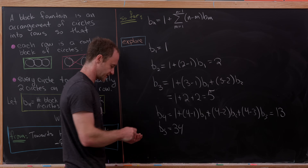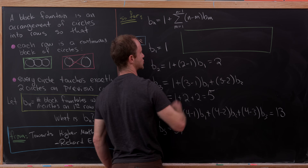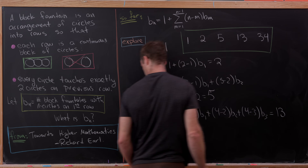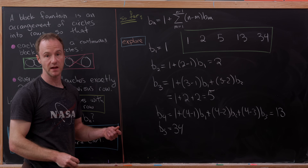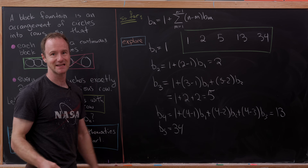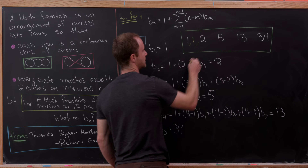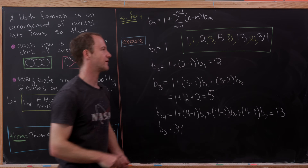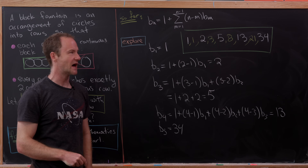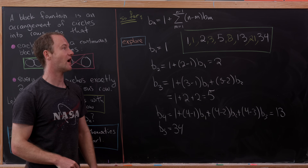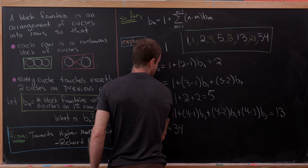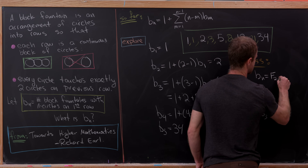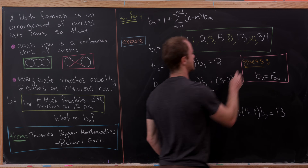Looking at these numbers: 1, 2, 5, 13, 34 — inserting 1, 3, 8, 21 between them reveals they are all Fibonacci numbers. The b_n values appear to be the odd-indexed Fibonacci numbers. This leads to the conjecture that b_n = F_{2n-1}, the (2n-1)th Fibonacci number.